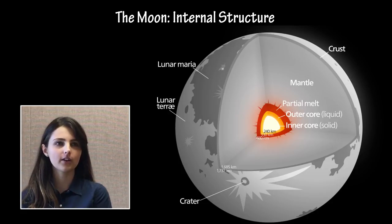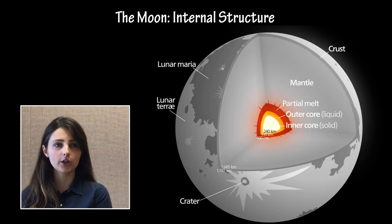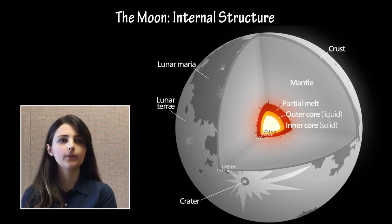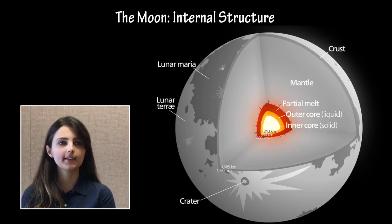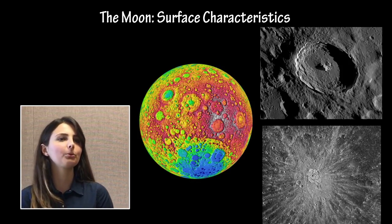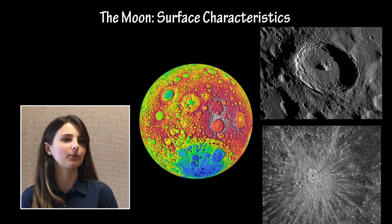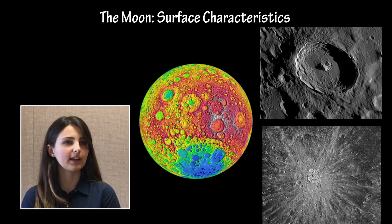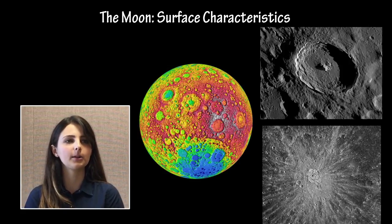The moon has a differentiated internal structure, which was surprising to many scientists given its size, composition, and distance from the sun. Many scientists believe a large impact early in the moon's history provided the necessary heat for differentiation and the emergence of a plagioclase-rich crust atop a mafic mantle. Moonquakes are caused not by tectonics, but by thermal expansions and contractions as the moon rotates and continues to cool internally, as well as from tidal stresses caused by Earth. The moon is tidally locked with Earth, meaning the same side always faces Earth, with a synchronous orbit where its rotation period and orbital period are equal. The geology of the moon, called selenology, is characterized primarily by cratering and volcanism.